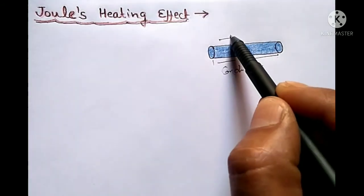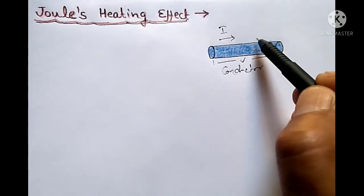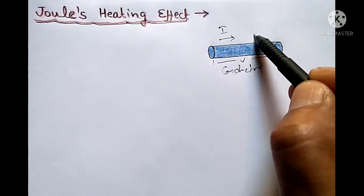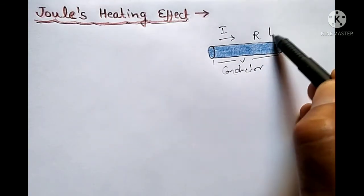Suppose in this conductor, I is the current flowing through it and R is the resistance of this conductor, and the current flows for time t.